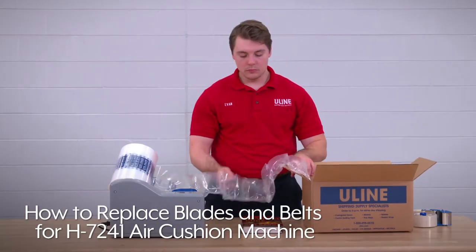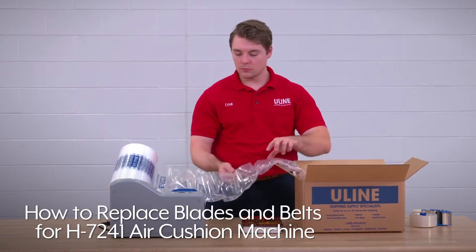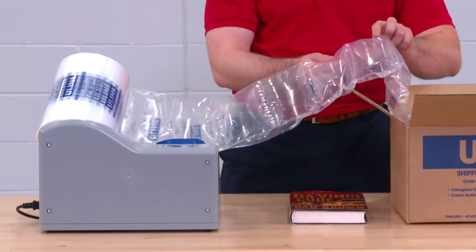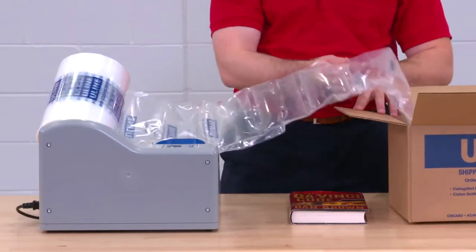After continued use of Uline's H7241 air cushion machine, you'll need to replace the blades and belts to keep the unit running smoothly.